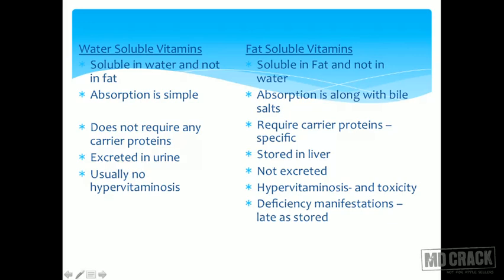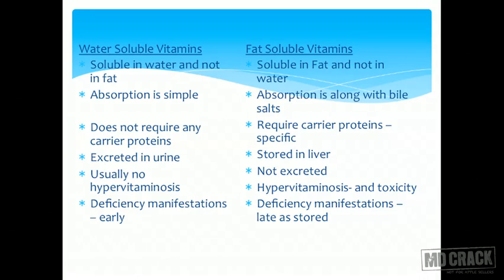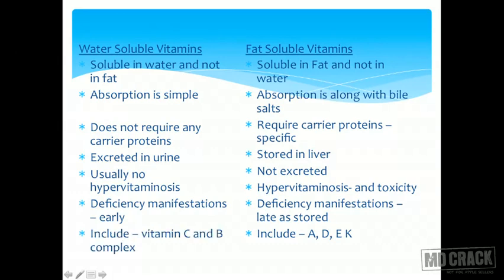Deficiency manifestations appear late in the case of fat-soluble vitamins, because existing stores must be depleted first before symptoms appear. For water-soluble vitamins, deficiency manifestations begin as soon as that vitamin is absent from the diet. The fat-soluble vitamins are A, D, E, and K; water-soluble vitamins include vitamin C and the B complex. Vitamin B12 is an exception and does not follow the typical water-soluble characteristics.